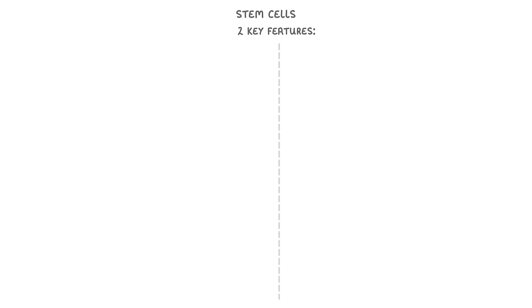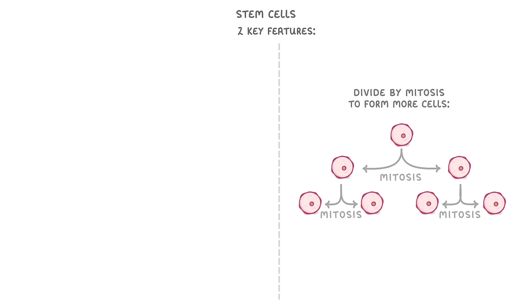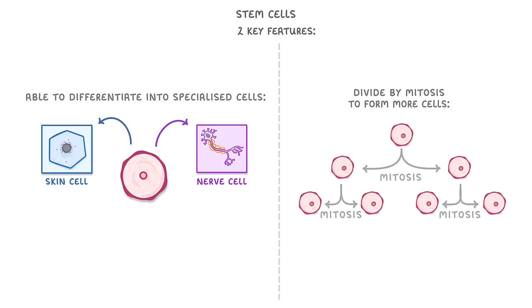There are really two key features that you need to know. The first is that stem cells are able to divide by mitosis to form more cells — so one can divide into two, then they can divide into four, and so on. The second is that stem cells are able to differentiate into specialized cells, so one stem cell could differentiate into a specialized nerve cell, whilst another could differentiate into a skin cell.